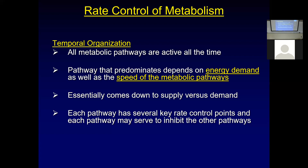Each pathway has its own rate control steps. The slowest step in each reaction is its rate control point. There's going to be an enzyme that is the rate limiting or rate controlling step in that pathway. And each pathway can only go as fast as its slowest step.